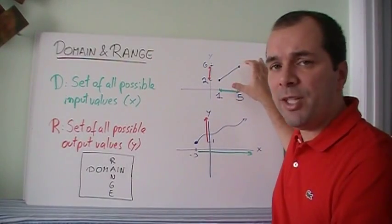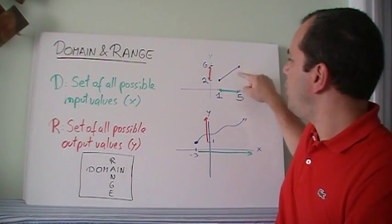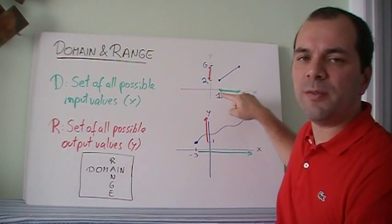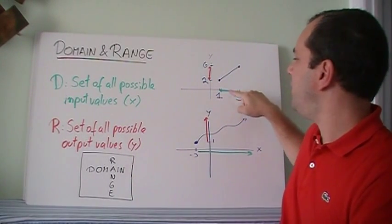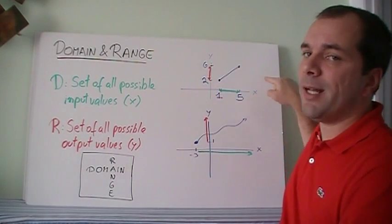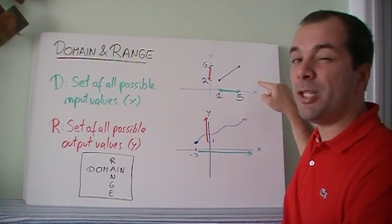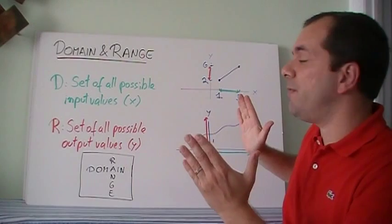If we have this kind of a function, which is just a segment, we see that the set of inputs goes from 1 to 5. So the domain goes from 1 to 5. Domain is not 0, domain is not 6, domain is not even 5.0001, it just stops at 5.